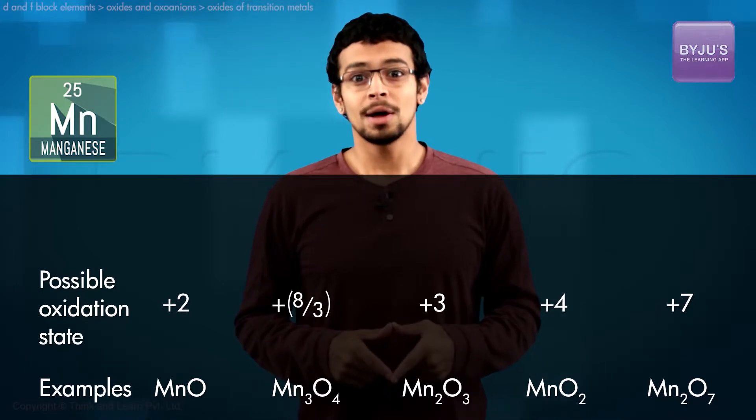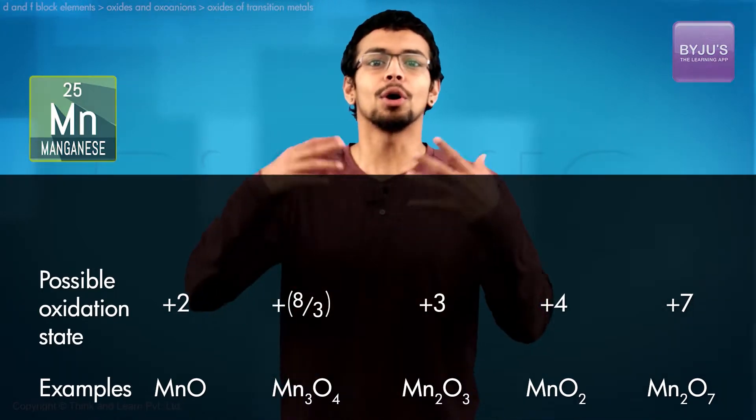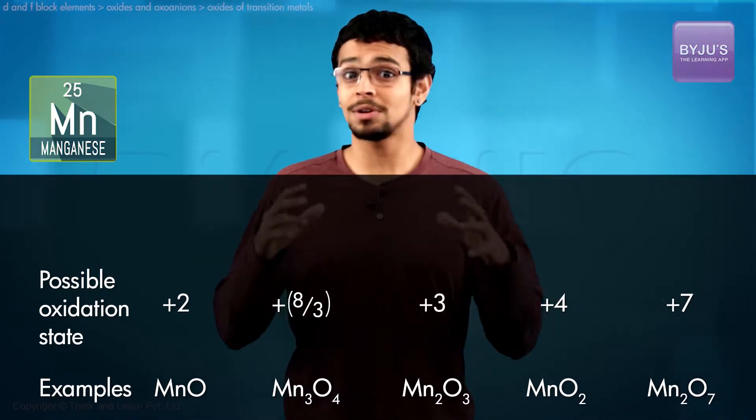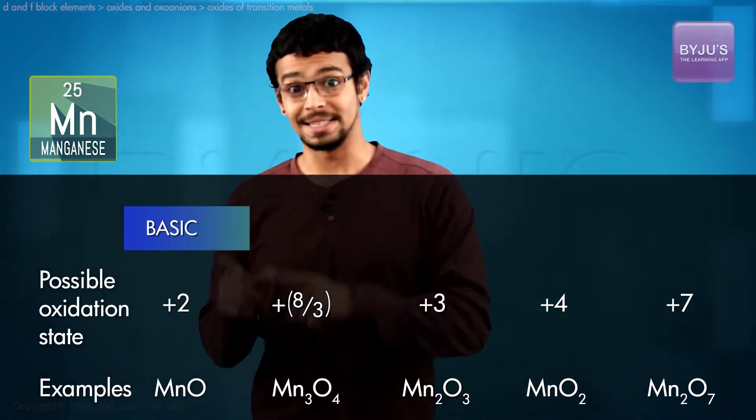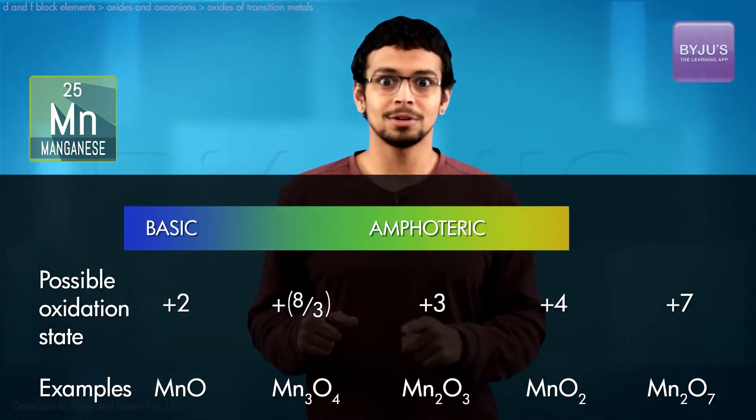Transition from lower oxides to higher oxides corresponds to a transition from being basic to amphoteric to acidic.